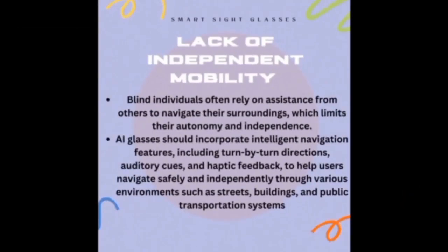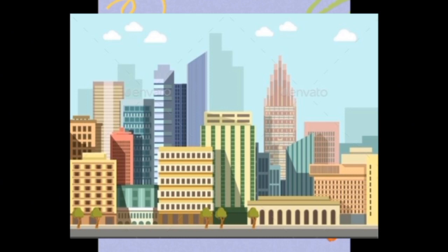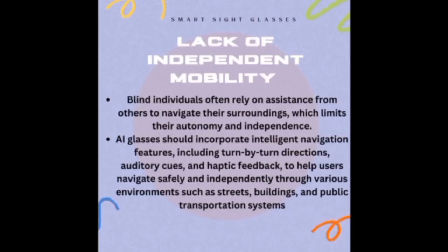Problem Statement — Lack of Independent Mobility: Blind individuals often rely on assistance from others to navigate their surroundings, which limits their autonomy and independence. AI glasses should incorporate intelligent navigation features, including turn-by-turn directions, auditory cues, and haptic feedback to help users navigate safely and independently through various environments such as streets, buildings, and public transportation systems.